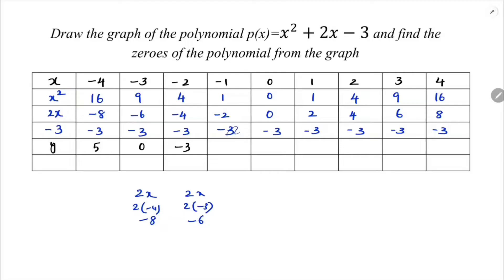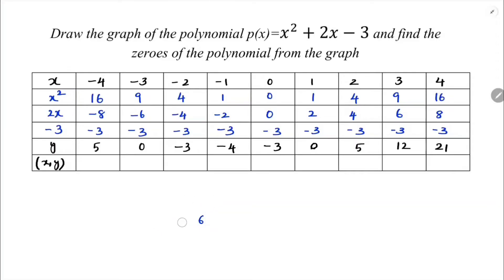Continuing: x = minus 1 gives 1 minus 2 minus 3 = minus 4; x = 0 gives 0 + 0 minus 3 = minus 3; x = 1 gives 1 + 2 minus 3 = 0; x = 2 gives 4 + 4 minus 3 = 5; x = 3 gives 9 + 6 minus 3 = 12; x = 4 gives 16 + 8 minus 3 = 21. So the coordinate pairs are: (minus 4, 5), (minus 3, 0), (minus 2, minus 3), (minus 1, minus 4), (0, minus 3), (1, 0), (2, 5), (3, 12), (4, 21).